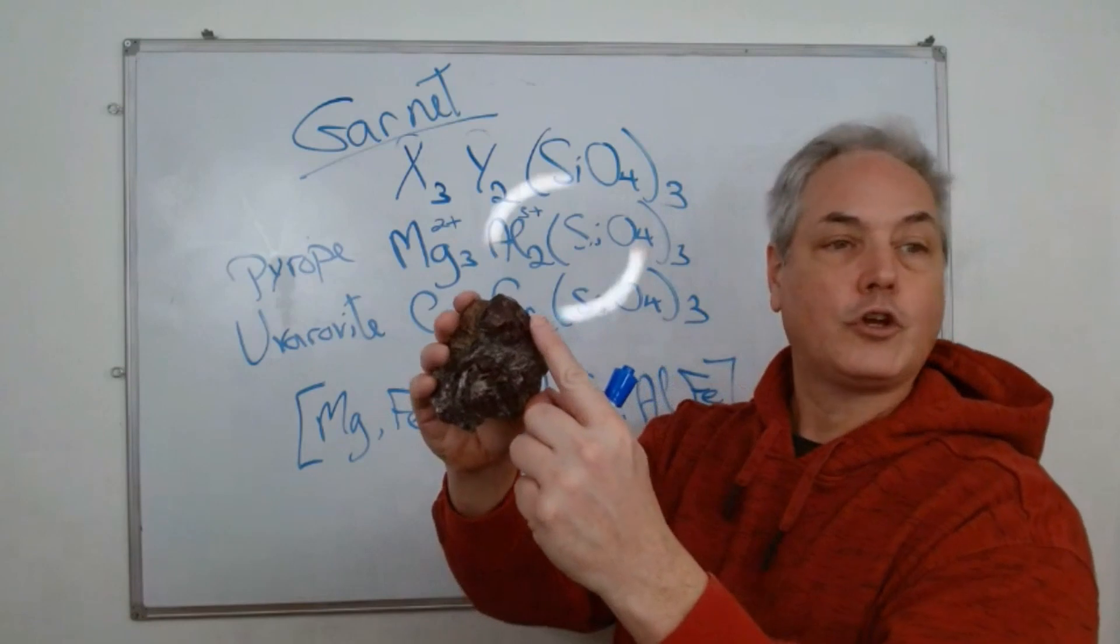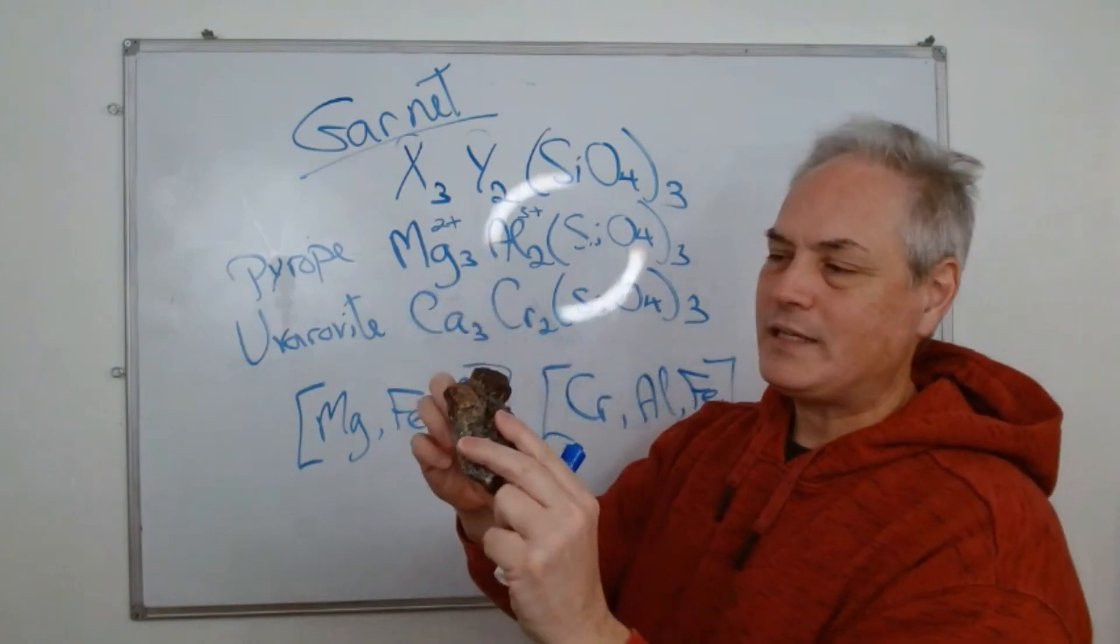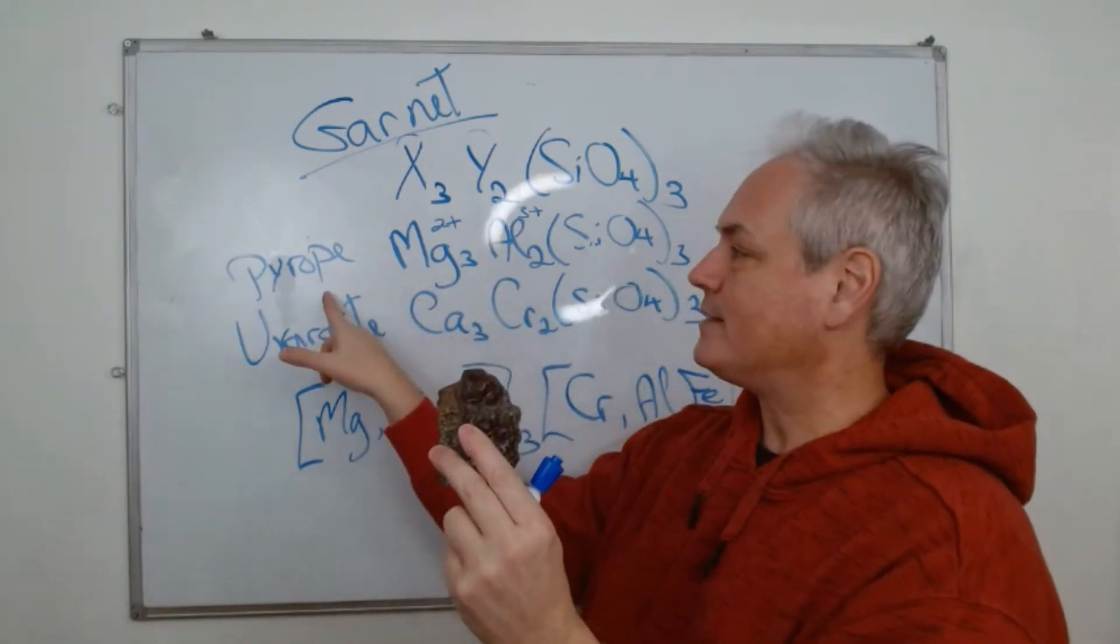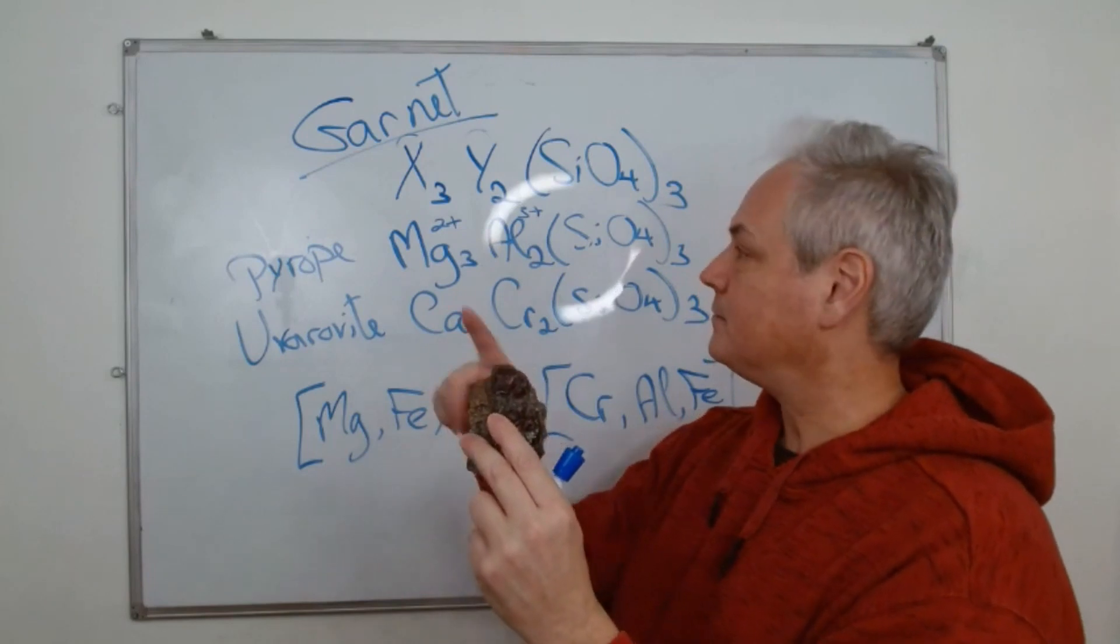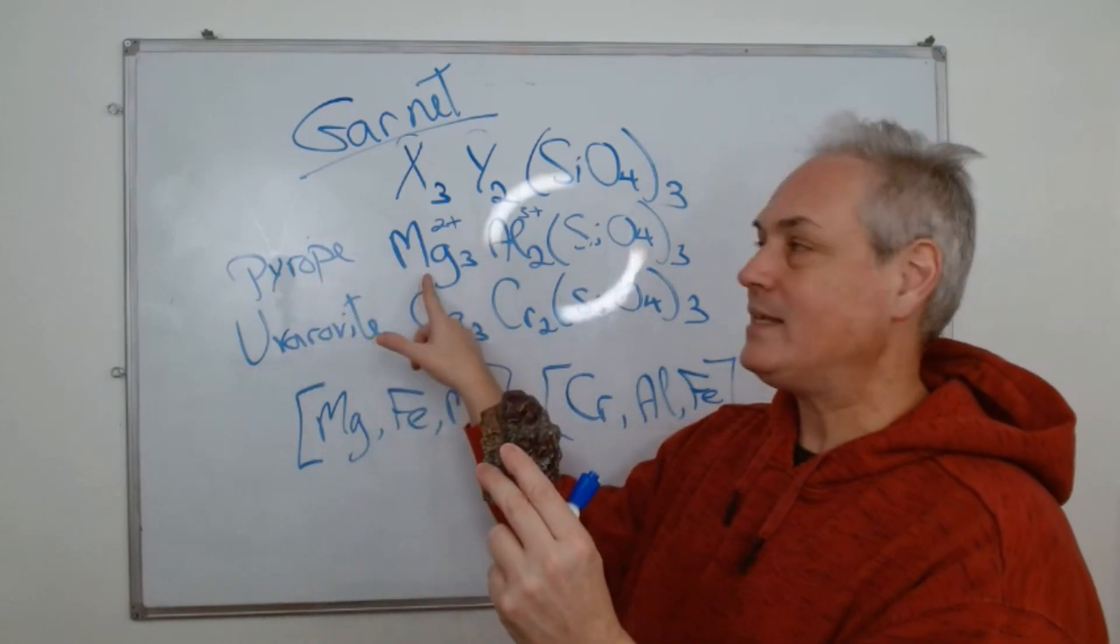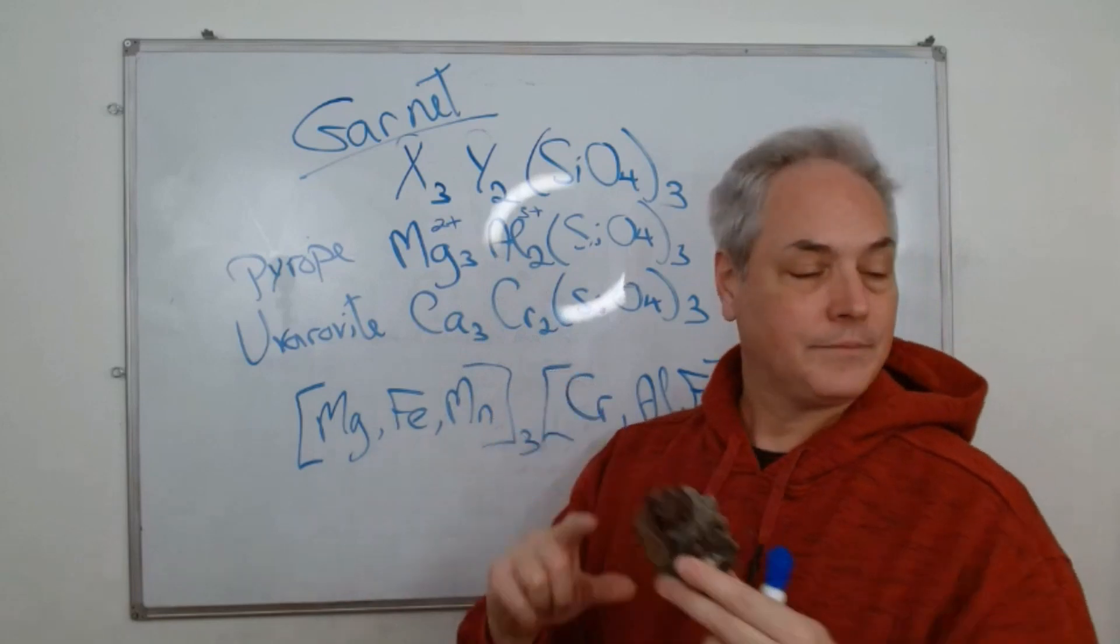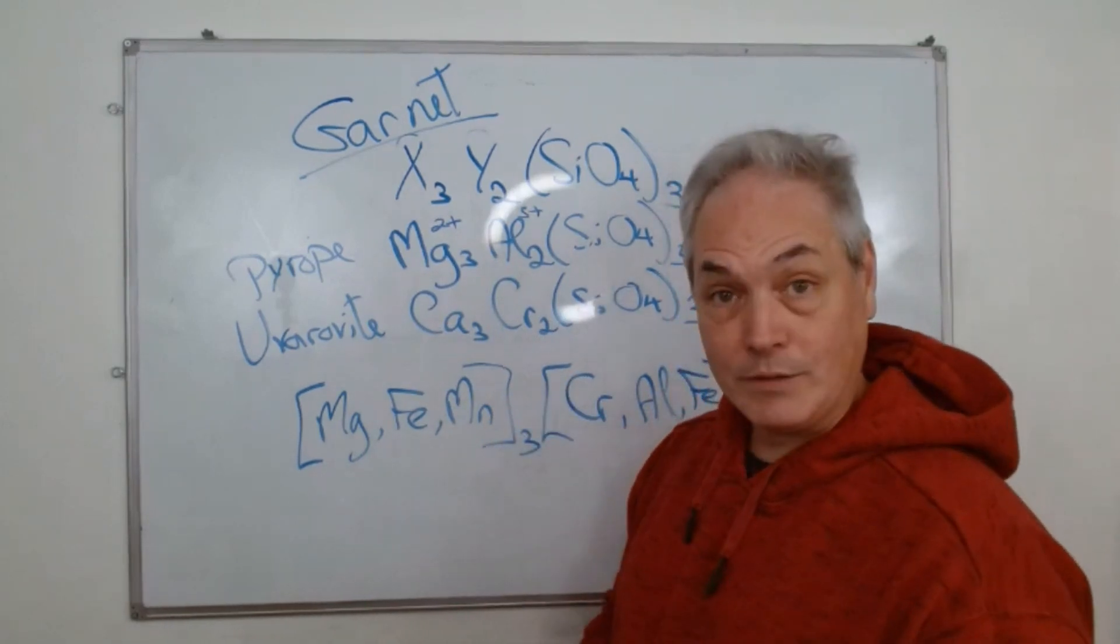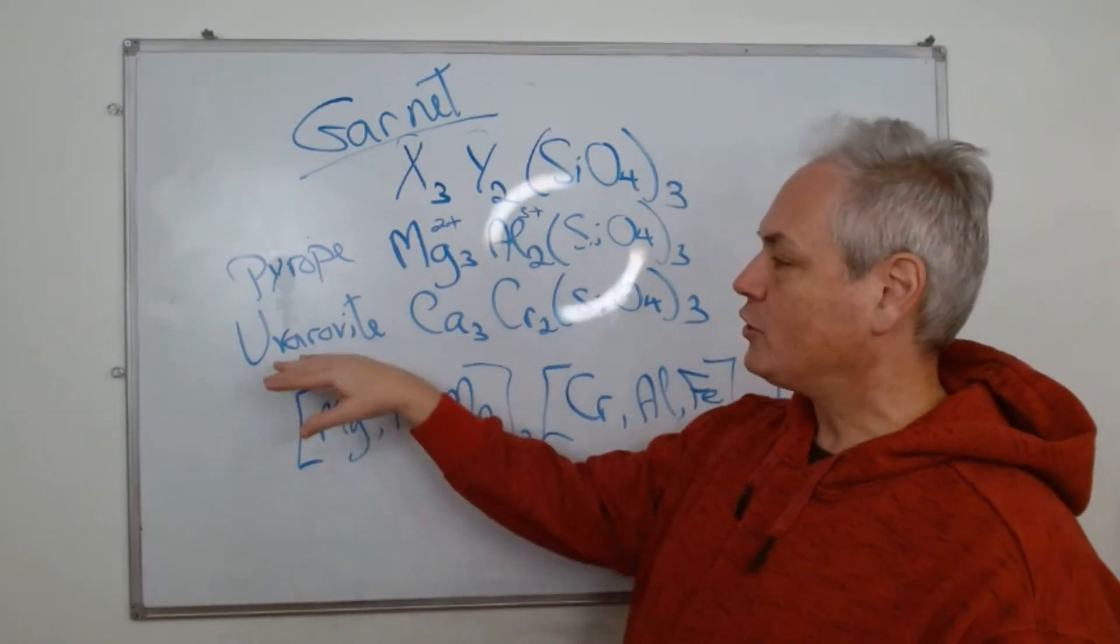Together they join in with the tetra oxide, the silicon tetra oxide, and there's three of them to create garnet crystals. Interestingly here we have pyrope which is that dark color. This one I still have to identify - it's either pyrope or almandine.